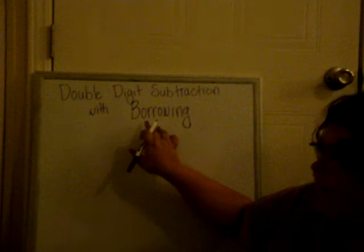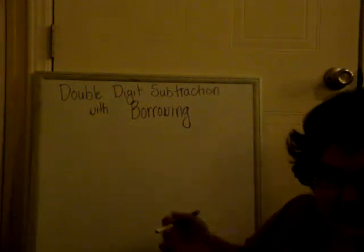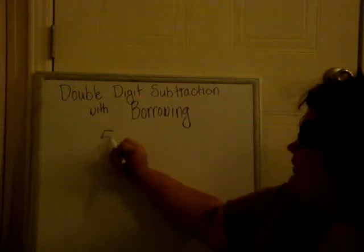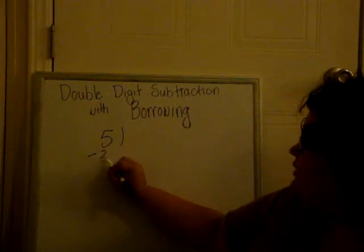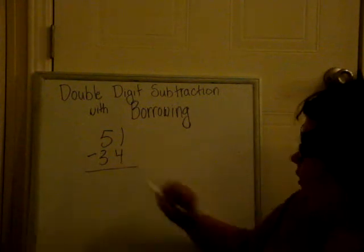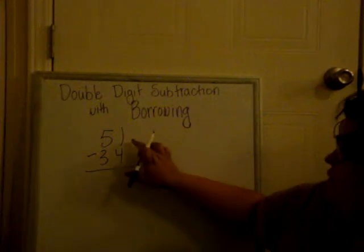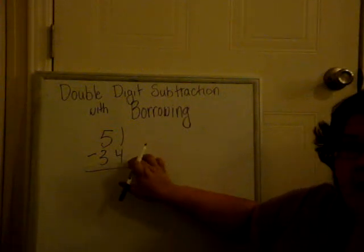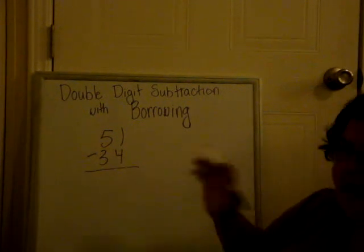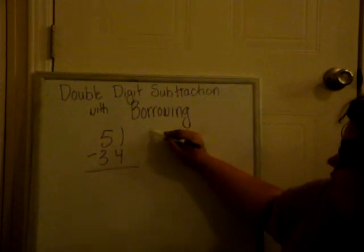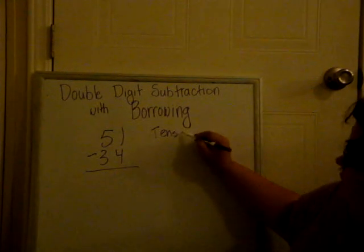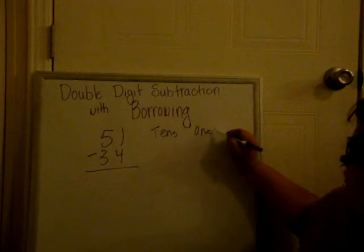Now when it comes to double digit subtraction with borrowing, it's just a little bit different. So let's choose our numbers. Do 51 minus 34. Okay? So you would start in your ones place. 1 minus 4. Well, you can't take 4 from 1, so I'm going to show you how to use borrowing. We're going to do our tens column and we're going to do our ones column.